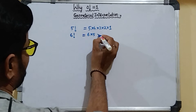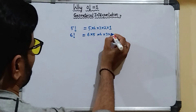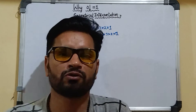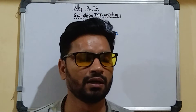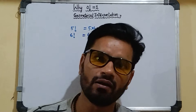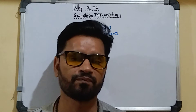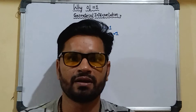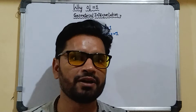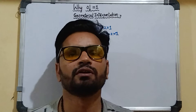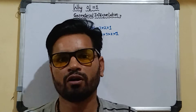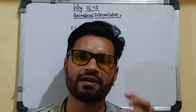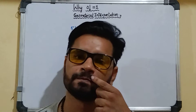Similarly, factorial 6 can be written as 6 × 5 × 4 × 3 × 2 × 1. So for any number, factorial notation means starting from that number and multiplying down to 1. For example, factorial 9 is the product of all numbers from 9 to 1. And factorial 20 is the multiplication of all numbers from 20 to 1: 20 × 19 × 18 × 17 × ... × 1.